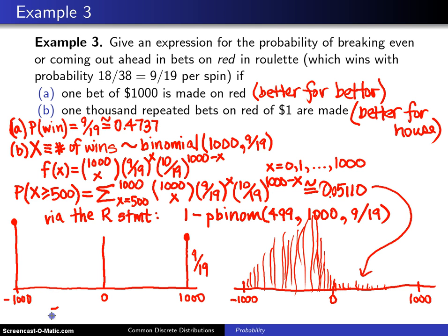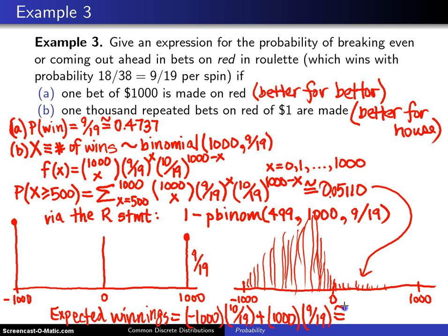There's another way of looking at this. If you look at part A, your expected winnings are equal to negative 1,000 times your 10/19 plus positive 1,000 times 9/19. And when you work that out, that comes out to approximately negative $52.63.